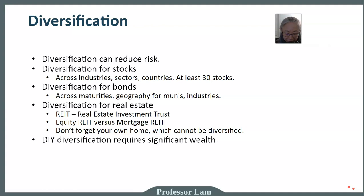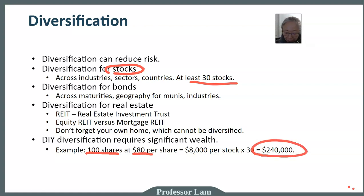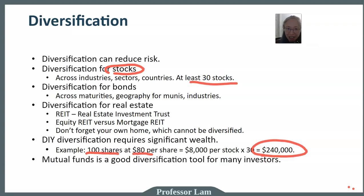Do-it-yourself diversification requires a significant amount of wealth. For example, to diversify a stock portfolio you need at least 30 stocks. If a stock sells for eighty dollars per share — which is relatively inexpensive — and you typically buy in round lots of 100 shares, that's eight thousand dollars per stock. Times 30 stocks equals two hundred and forty thousand dollars to start. Not too many investors have $240,000 to begin investing, and therefore mutual funds are a very effective diversification tool for most investors.